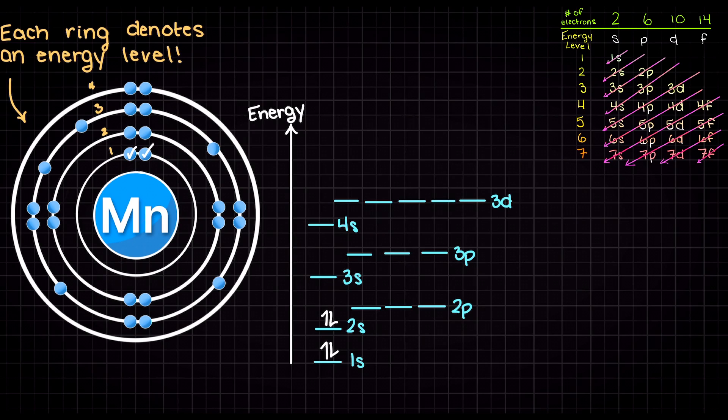Next following our energy level diagram arrows we have the 2s subshell, which again can take 2 electrons. Then we are going to move to the 2p orbitals, of which there are 3 and these orbitals can all take 2 electrons. In total this means that we can place 6 electrons within our 3 2p orbitals. This leaves us with 17 electrons left to place.